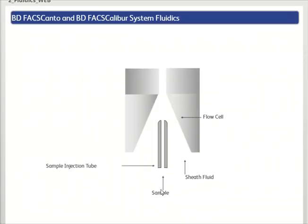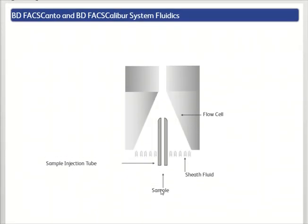In cytometers such as the BD FACSCanto or the BD FACSCalibur system, the sample stream is pressurized upward through the flow cell.